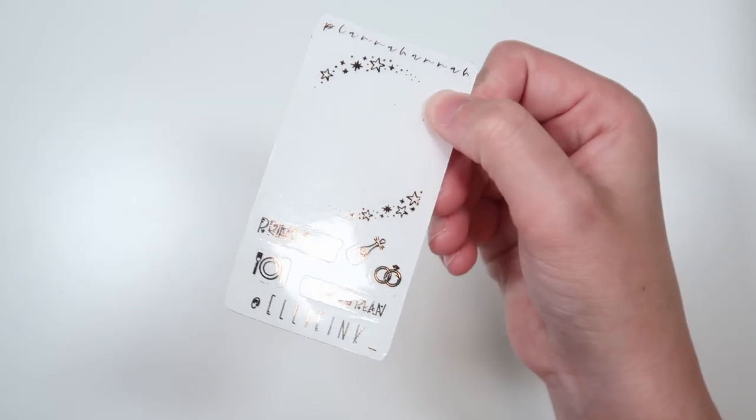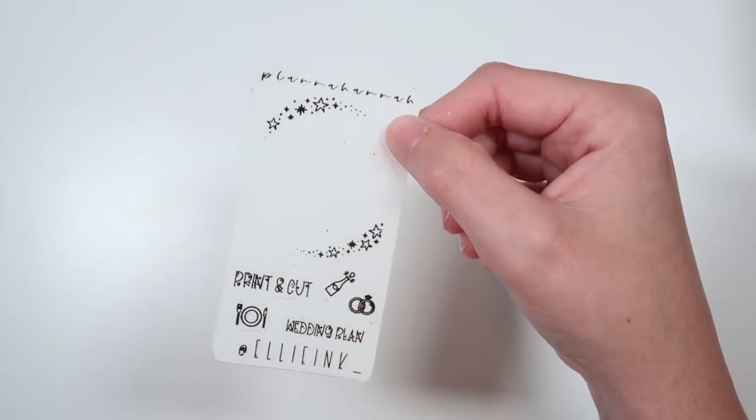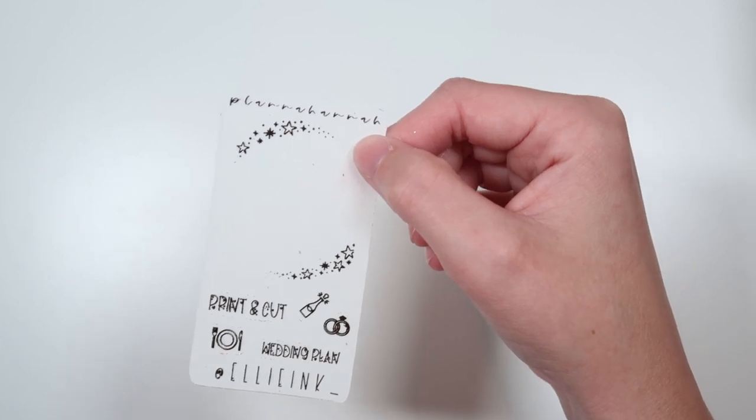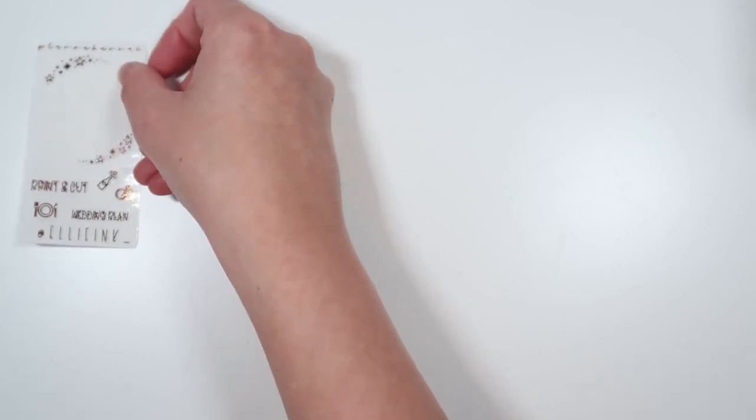Your first option is Ellie. So you can put Ellie in the notes. This is being shown in bronze. There's a celestial frame overlay, print and cut, and wedding plan in the January font of the month. Champagne popping, rings, and a place setting icon.